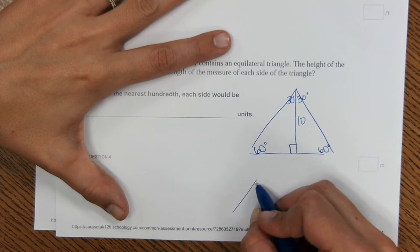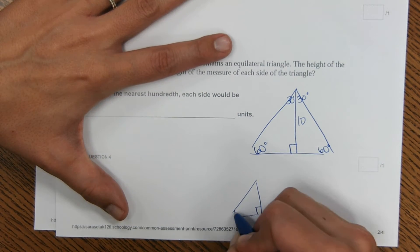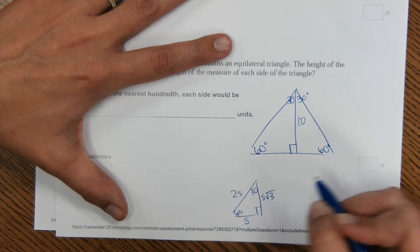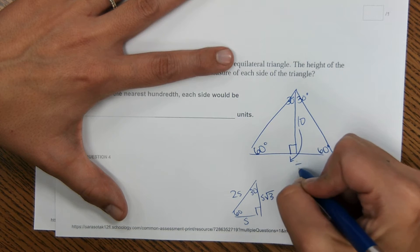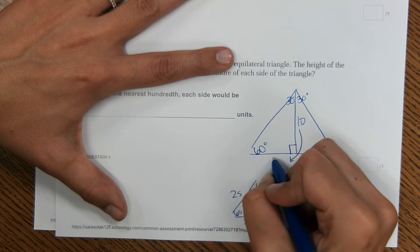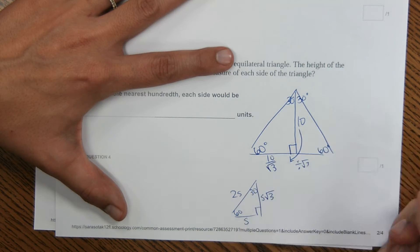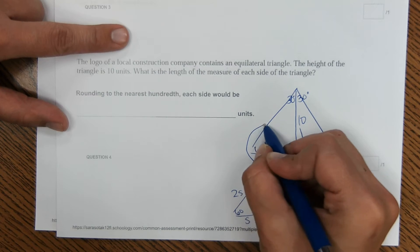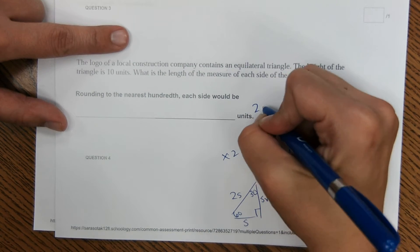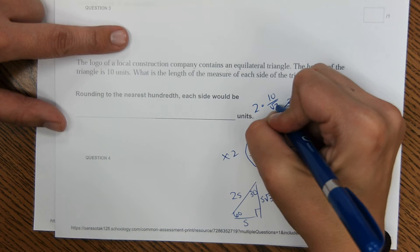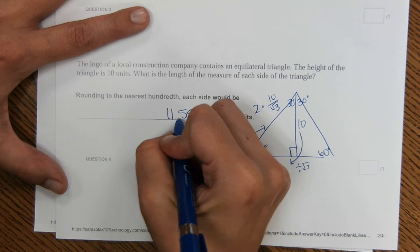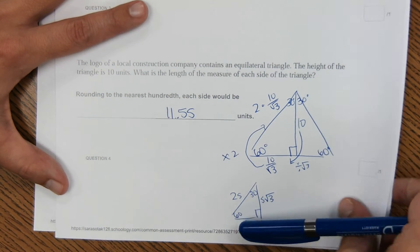Now we have 30, 60, 90. So based on the 30, 60, 90 triangle, we have our shortest side, 2 times our shortest side, and short square root of 3. So we can divide this by square root of 3 to get this side. And then to get one length measure of each side, to get this, we can multiply by 2. So 2 times 10 over square root of 3. And then we can do this in a calculator, just plug the numbers in, and it comes out to 11.55.